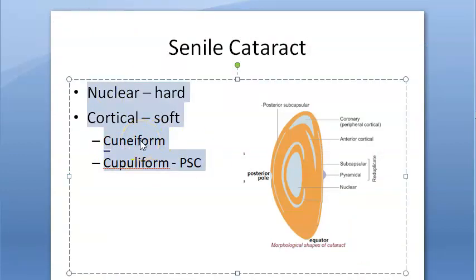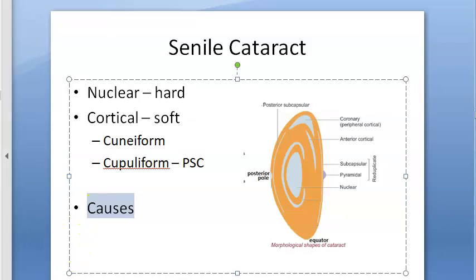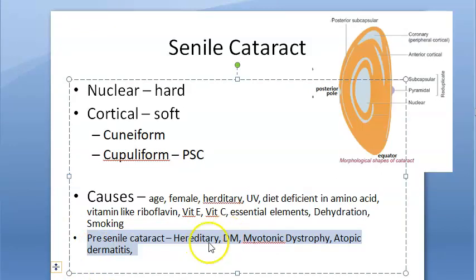Remember, all these types — nuclear with cortical, cuneiform, cupuliform — can coexist. Causes include age above 50 years, affecting both genders, though it is slightly more common in females. Hereditary factors can also contribute, along with ultraviolet irradiation and diet — if the diet is deficient in certain proteins, it can lead to cataract. Dehydration is also a cause.